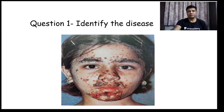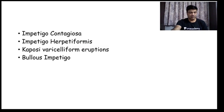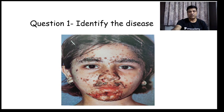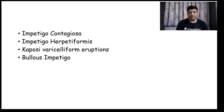Coming to the first slide. Identify the disease. Your choices are Impetigo contagiosa, Impetigo herpetiformis, Kaposi varicelliform eruptions and Bullous impetigo. The correct answer is the child is having Impetigo contagiosa.